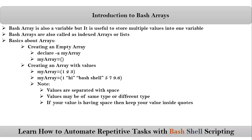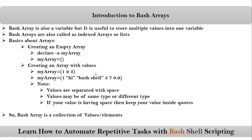If your value contains a space, then keep your value inside quotes. For example, 'bash shell' — if I want to treat that as only one data element, since it has a space, I keep it inside quotations. So finally, a bash array is a collection of values or elements, or simply, a bash array is useful to store multiple values into one variable.